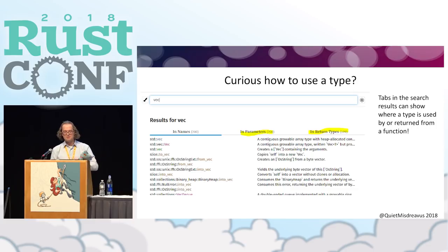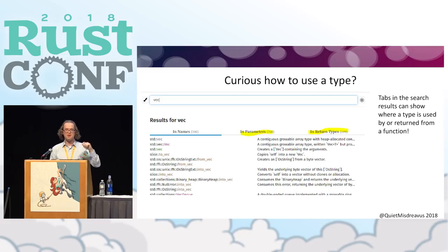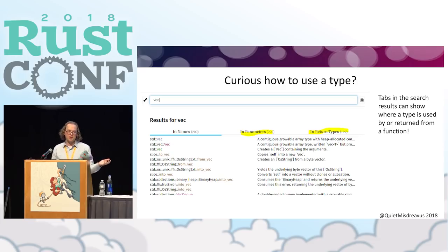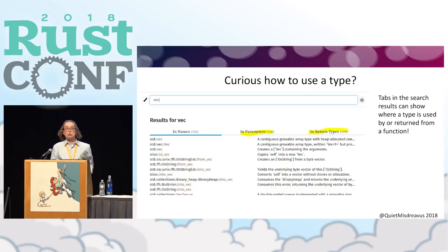Speaking of, if you look for a type in the JavaScript search in the little search bar at the top of the docs, there are 'in parameters' and 'in return types' tabs you can use. So I searched 'Vec' here and you can say, show me all the functions that take Vec as a parameter, or show me all the functions that return Vec. It's a really nice way to see how a type is used and how you can get one of those types.